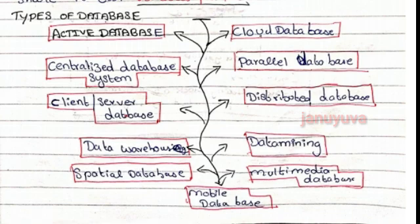Distributed database — data connected via a network. That is distributed database. Data warehouse — a bulk of data store at multiple levels. That is data warehouse.